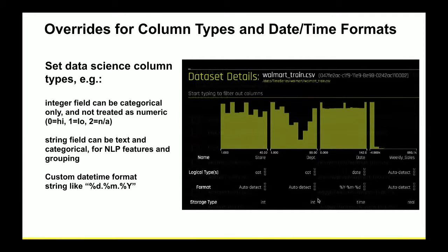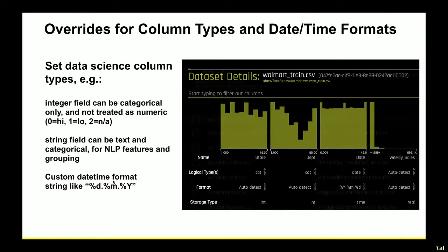A highly requested feature just added is the column type setter. You can now set the type of a column to be categorical even though it contains integers like 1 to 50 — for example, a department ID where 27 is not greater than 26, just a different store. Setting this logical type tells Driverless not to compute differences between values as it would for a numeric column. You can also set the date string format if you have an exotic format not detected by the internal parser — though usually the format gets detected automatically.